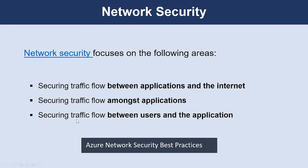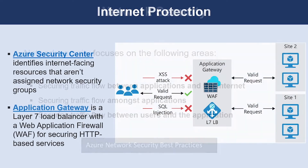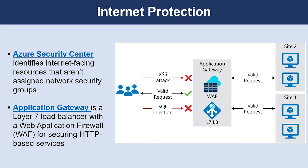And finally, securing traffic flow between users and the application focuses on securing the network flow for your end users. The first step is to start by assessing the resources that are internet-facing and only allow inbound and outbound communication where necessary. Identify all resources that are allowed inbound network traffic of any type and ensure they are necessary and restricted to only the ports or protocols required.